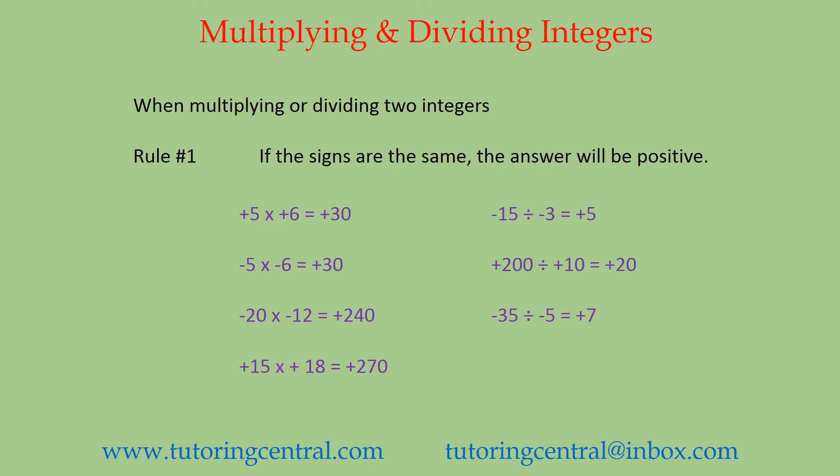When multiplying or dividing two integers, rule number one: if the signs are the same, the answer will be positive. In other words, if both of your signs are positive, your answer will be positive. If both of your signs are negative, your answer will also be positive. And here are a few examples.